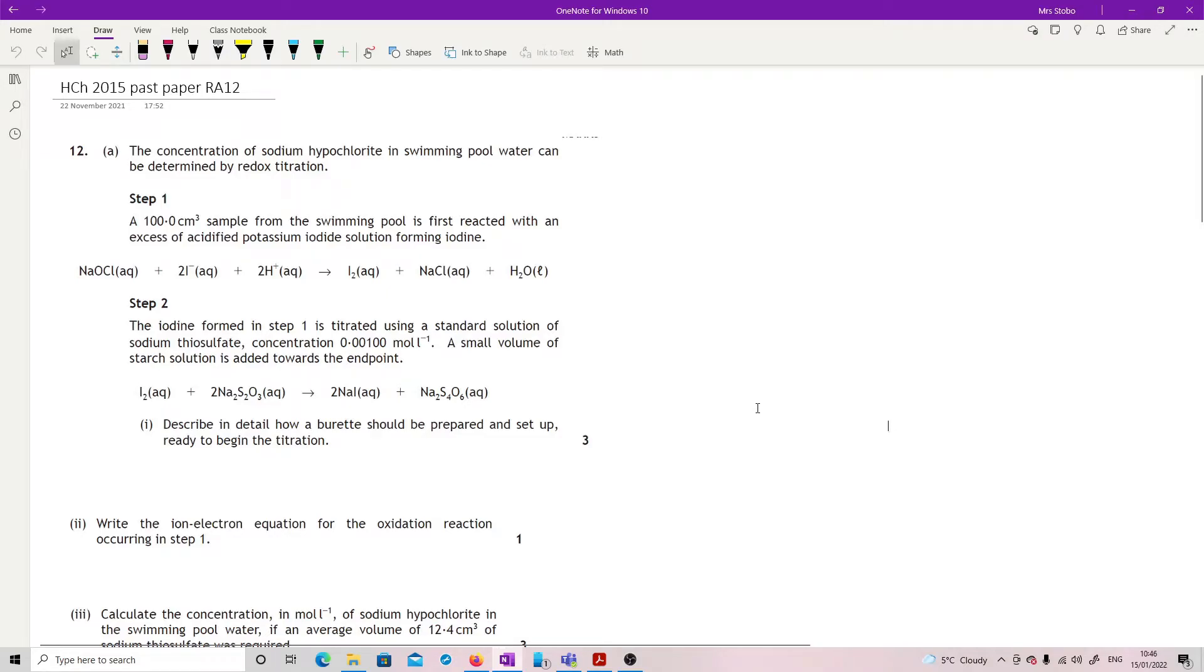Question 12. The concentration of sodium hypochlorite in swimming pool water can be determined by redox titration. This is a quite common redox that's used in a lot of different questions. We've got 100 centimeter cubed sample from the swimming pool is reacted with excess acidified potassium iodide solution, making iodine.